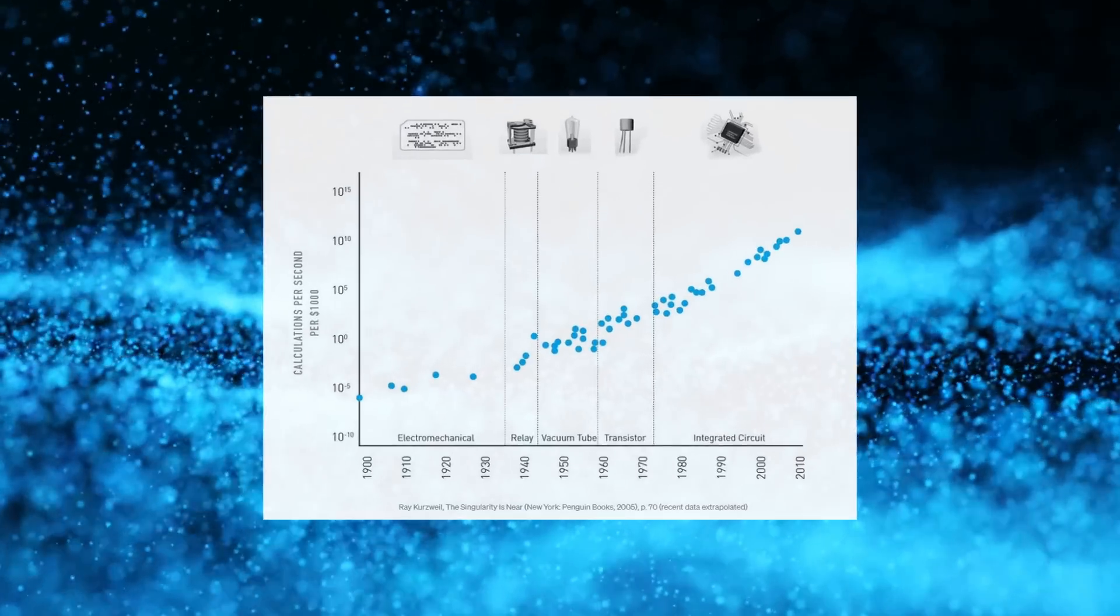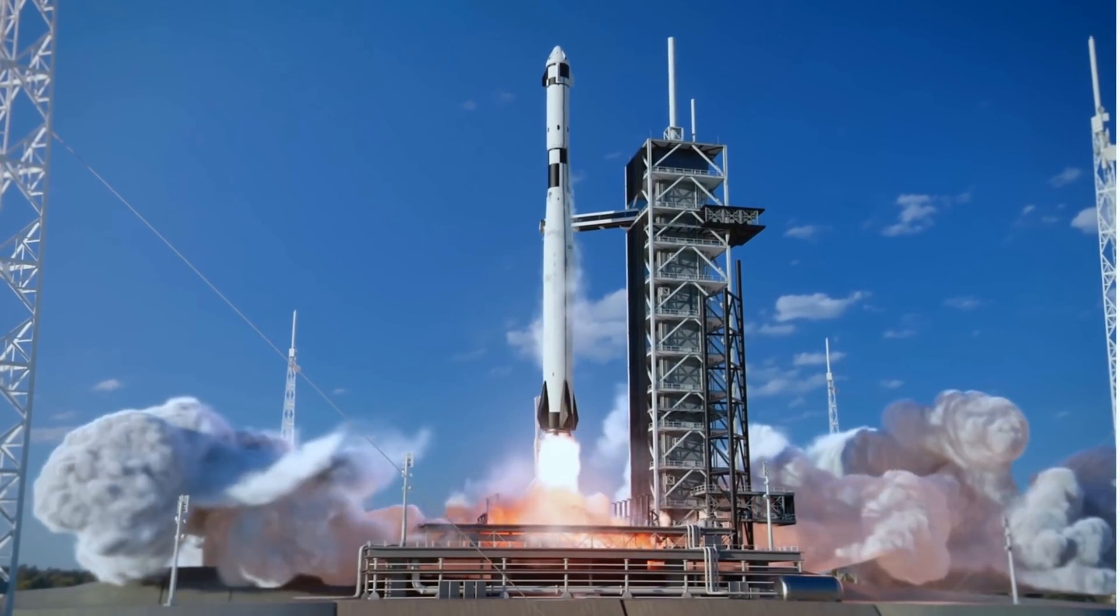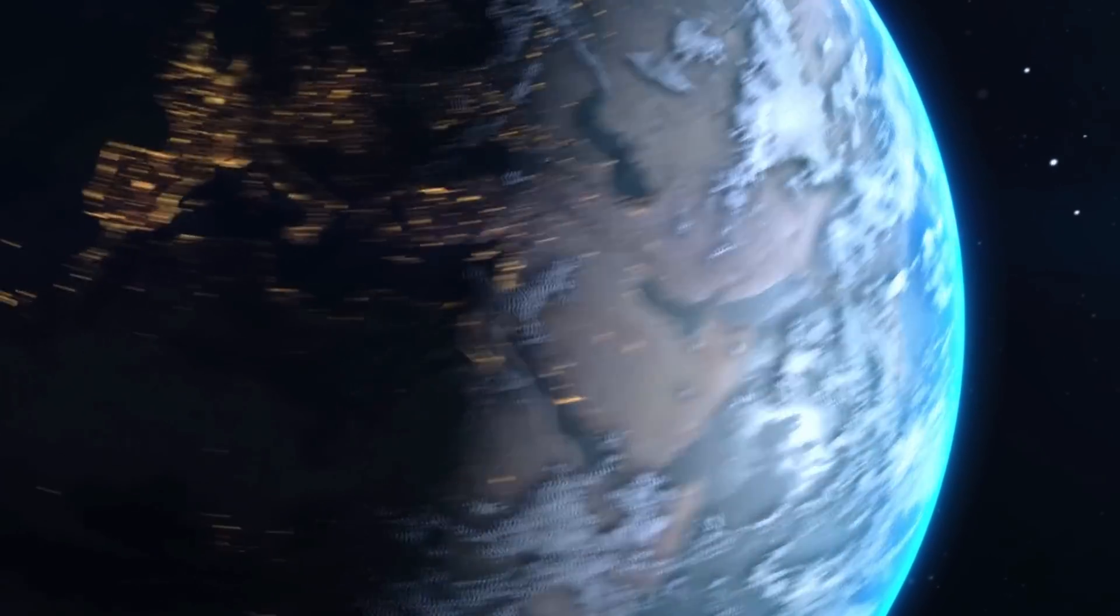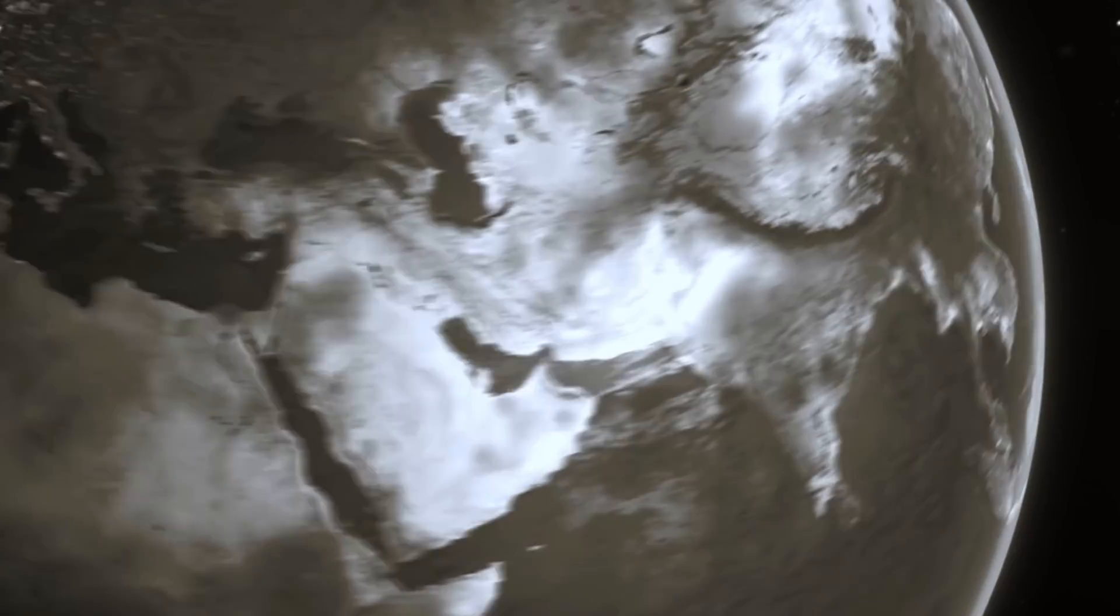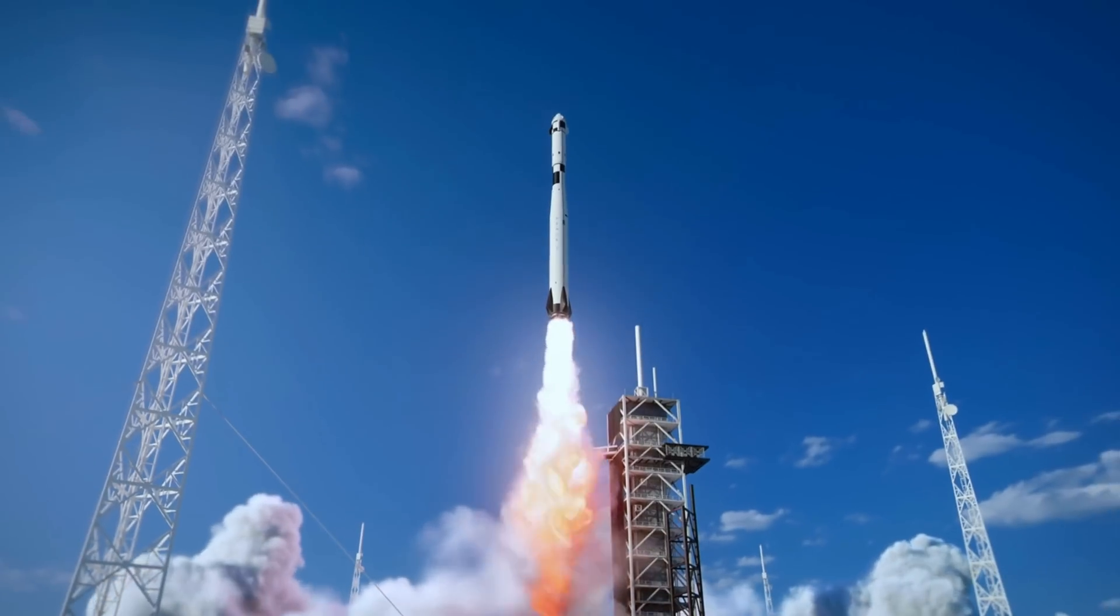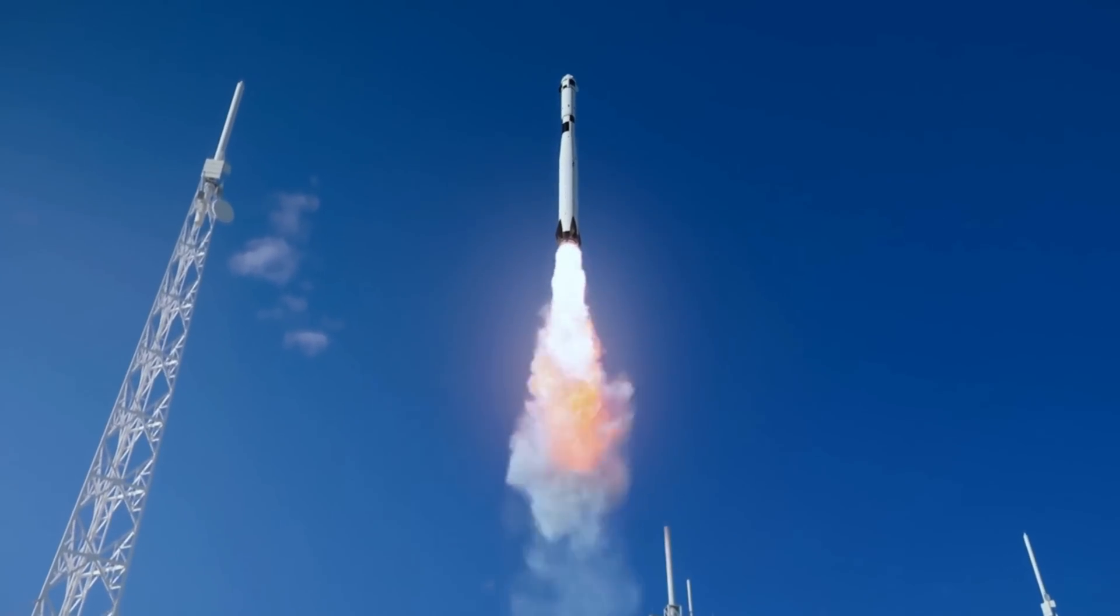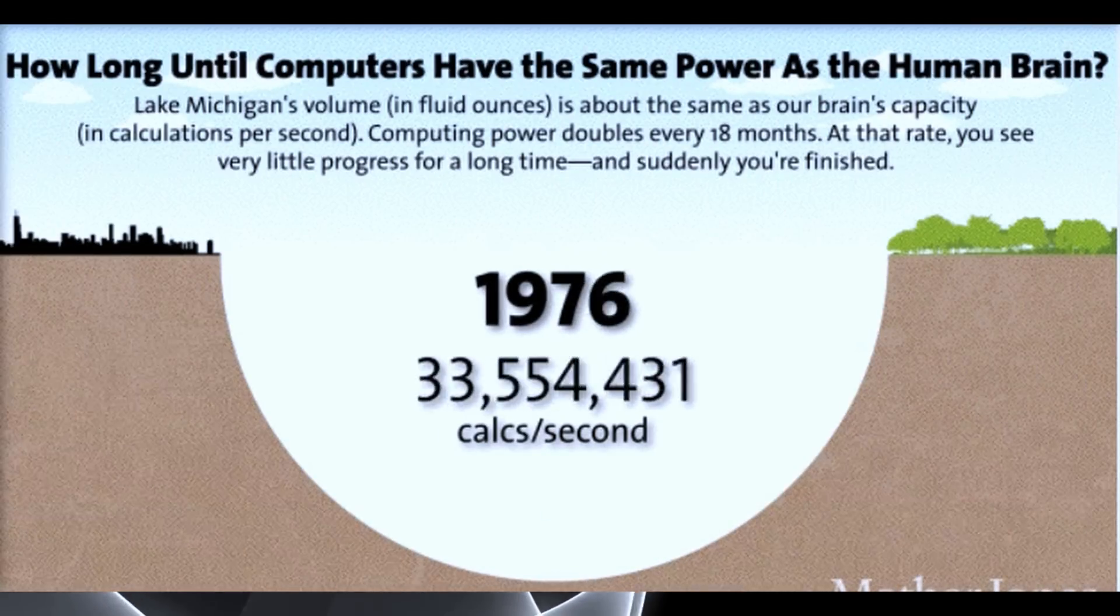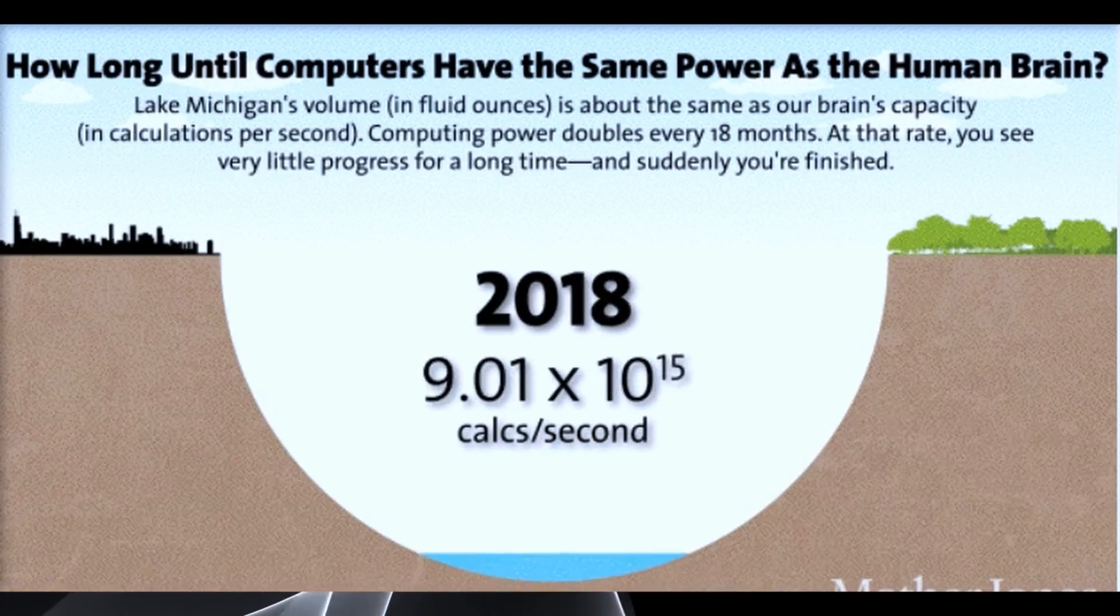Central to Kurzweil's predictions is his concept of the law of accelerating returns, suggesting that technological progress is not a linear process but an exponential one, which he's already proven with empirical evidence over previous timelines. This means that unlike with linear growth, where equal progress is made in equal intervals of time, exponential progress doubles in each interval, meaning that affordable devices with the power of the human brain are just around the corner.